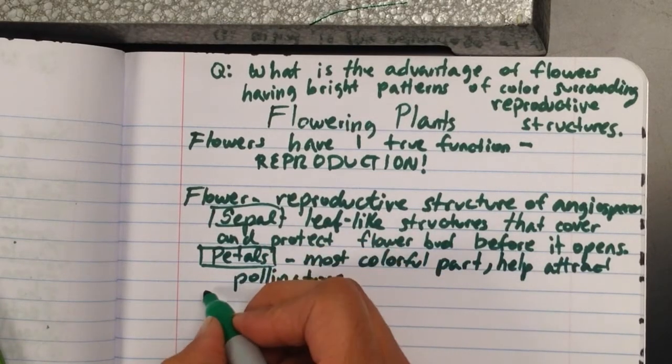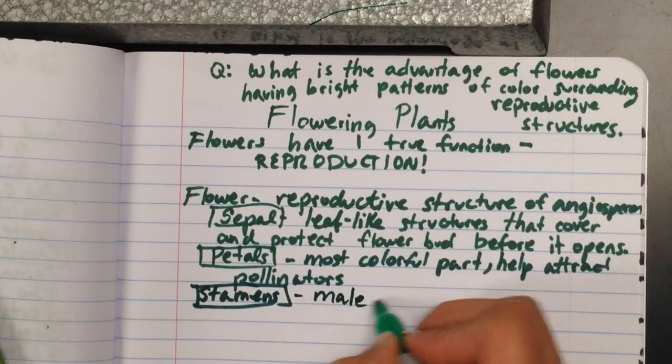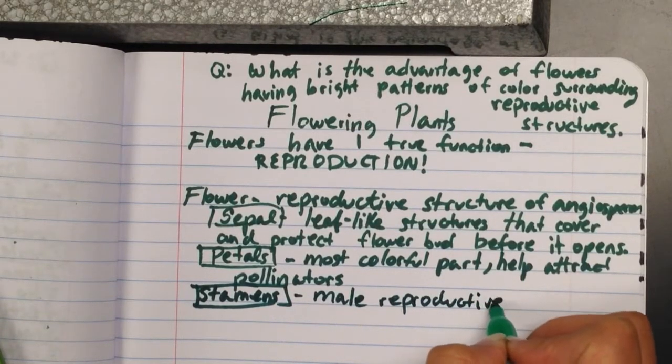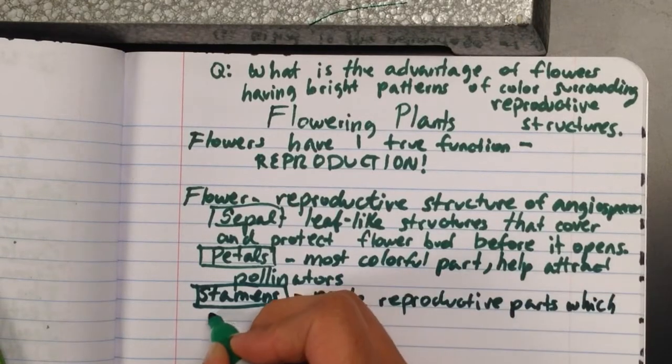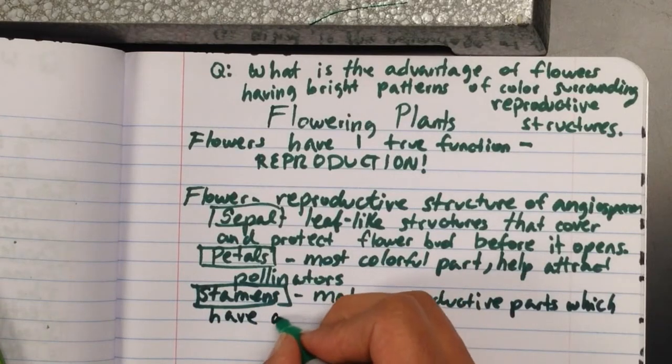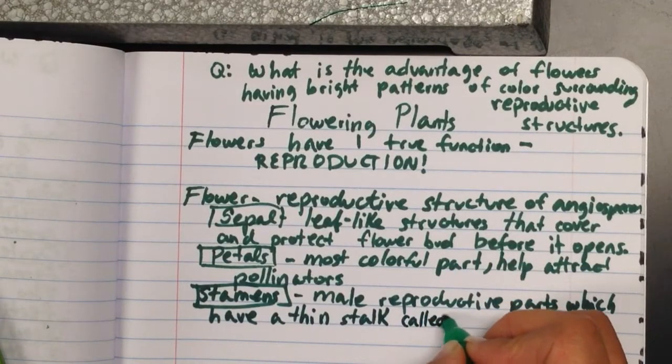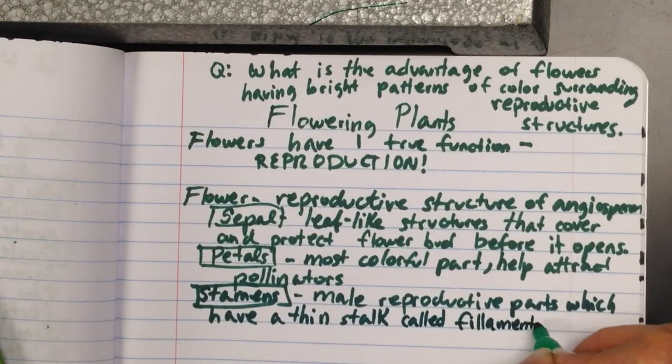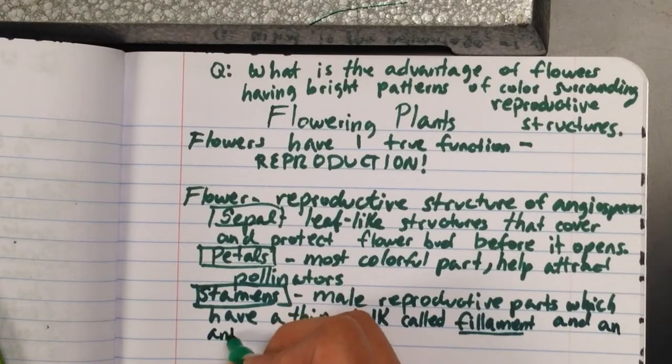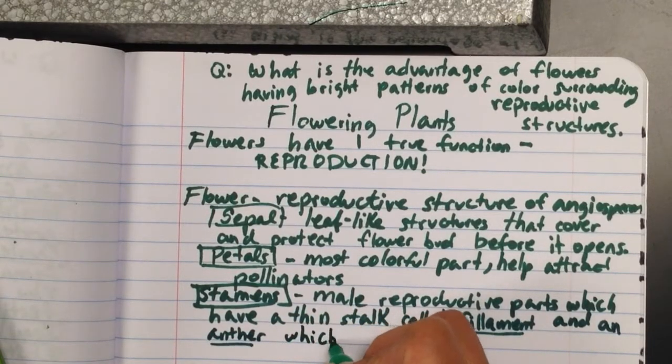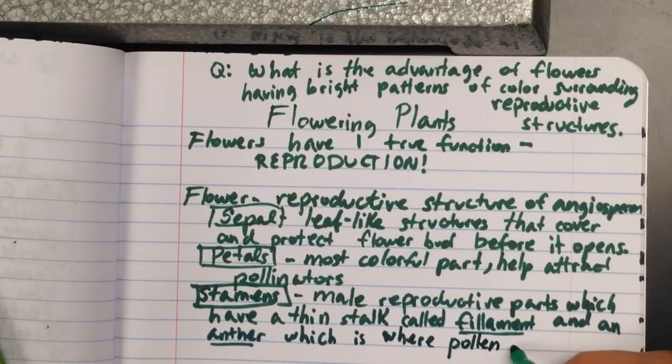And the next part is the stamen, which is the male part of the flower. So this is the male reproductive parts, which have a thin stalk called a filament, and an anther, which is where the pollen is, where pollen is produced.